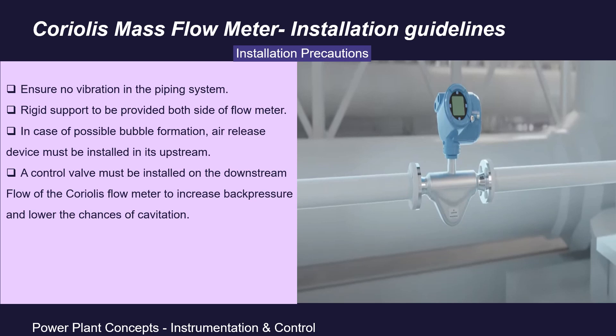There are some points to take care of during installation. First, as Coriolis flow meters are highly sensitive to vibrations, any external vibrations can cause errors in measurement — so the pipeline where it is installed must be free from vibrations. Second, both sides of the flow meter must be supported rigidly. Also, if there is any chance of bubble formation in the fluid, an air release device must be installed upstream. A control valve must also be installed on the downstream side to increase back pressure and lower the chances of cavitation.